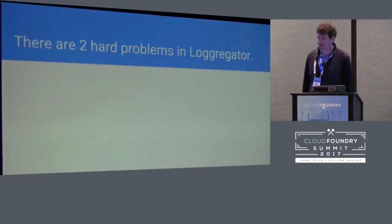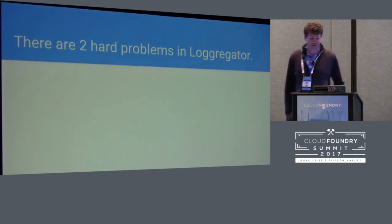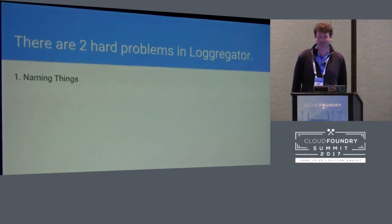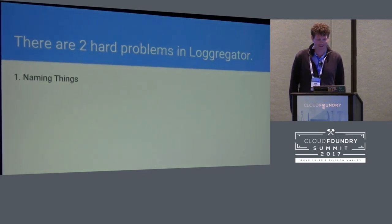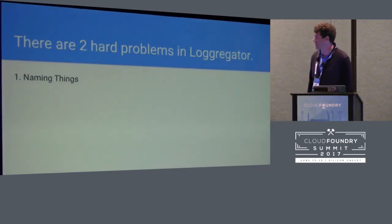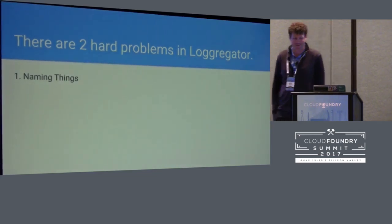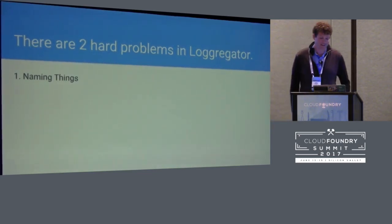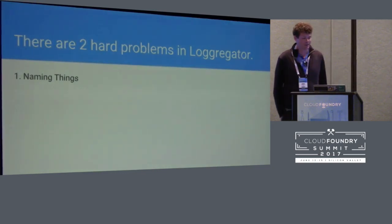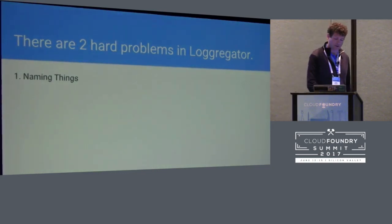As promised, there are two hard problems in LoggerGator. The first one is naming things, and if you have dealt with a LoggerGator system or looked at a metric from the Cloud Foundry platform, you'll know that we're still in the adolescence of our naming conventions. It is really hard to go back and change these names once they're established.